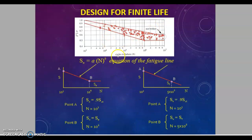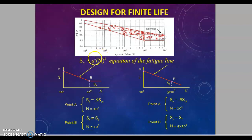For finite life design — finite life is the life before 10 to the power 6 cycles. The equation for this particular line at 10^6 cycles, on a logarithmic scale, appears to be a straight line but is actually an exponential curve. The equation of this curve is exponential: SN equals small a times N raised to small b.